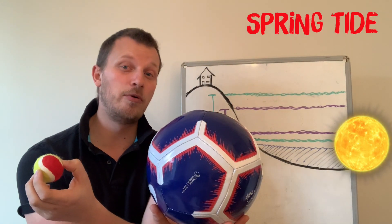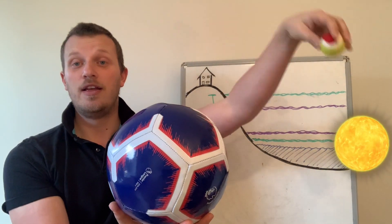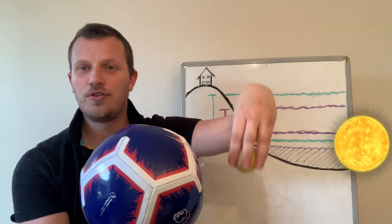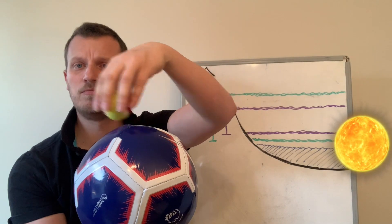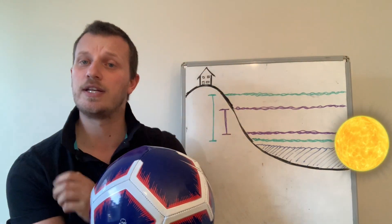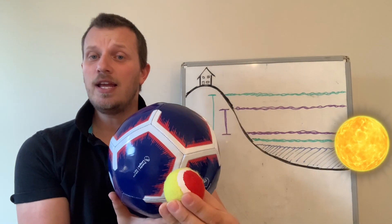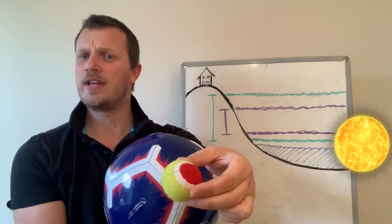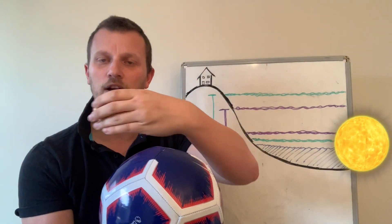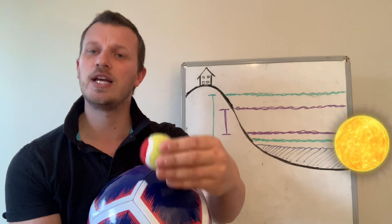And sometimes the way people remember that is all of these three things are in line. The sun, the moon and the earth. That's going to give us a spring tide. If we've got a half moon, they're not quite in line because we've got a line going this way and the sun and the earth going this way. And that's going to give us a neap tide.